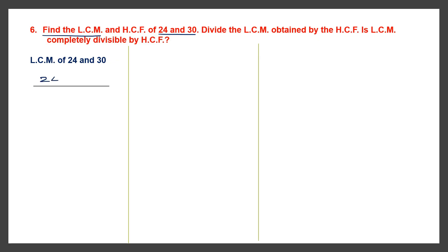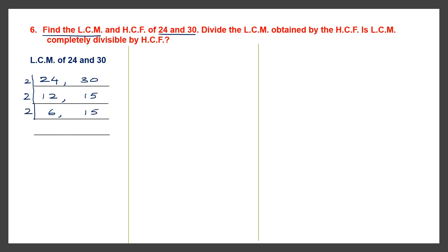So we have 24 and 30. Let's divide by 2. 2 twelves are 24 and 2 into 15 is 30. Since we have a 12, we continue to divide by 2: 2 into 6 is 12, and 15 is not divisible so we bring it down. Continue dividing by 2 because there is a 6: 2 threes are 6, and 15 comes down as it is. Now we can't divide 3 or 15 by 2, so we divide by 3: 3 ones are 3 and 3 fives are 15. Now we use 5: 1 we bring down and 5 ones are 5.